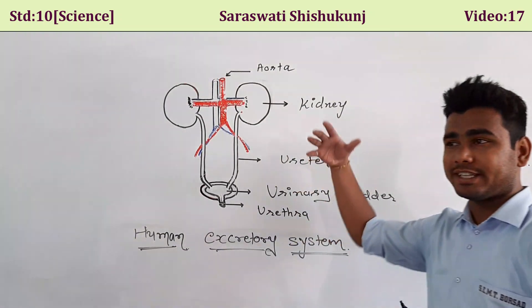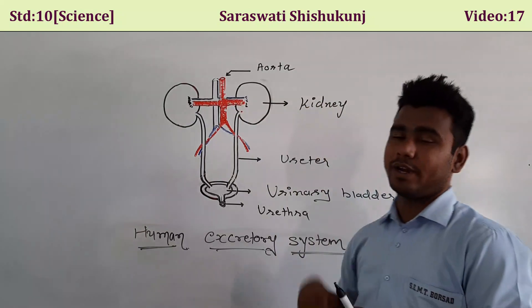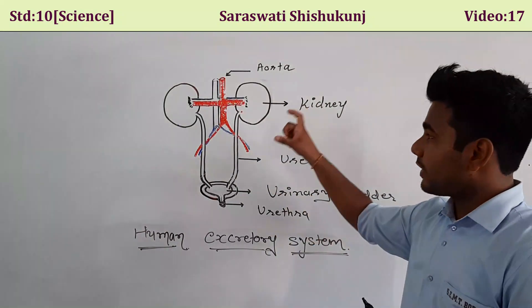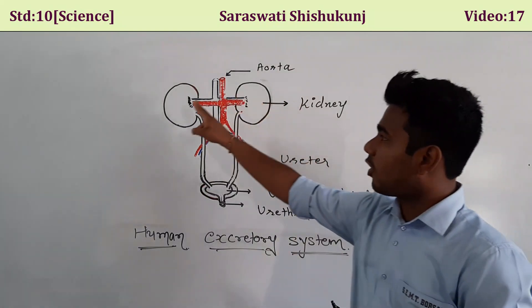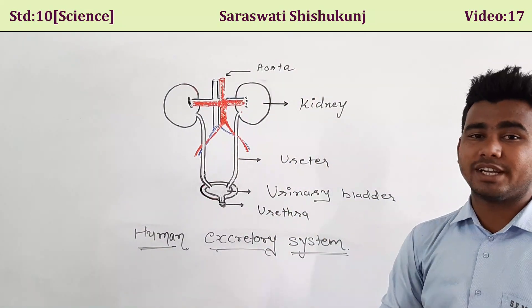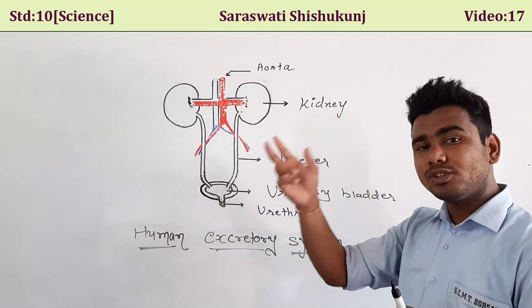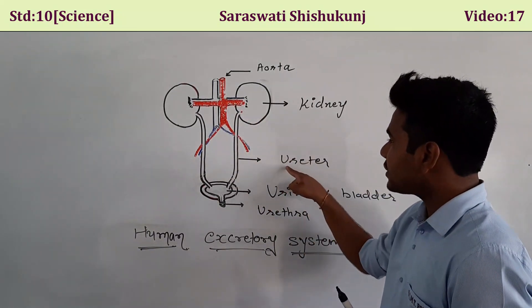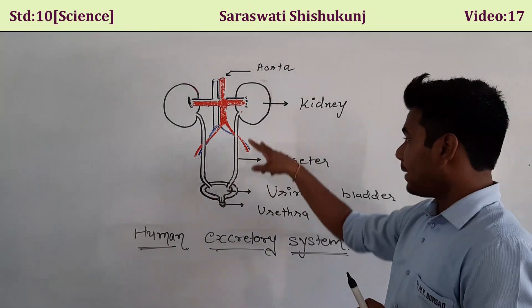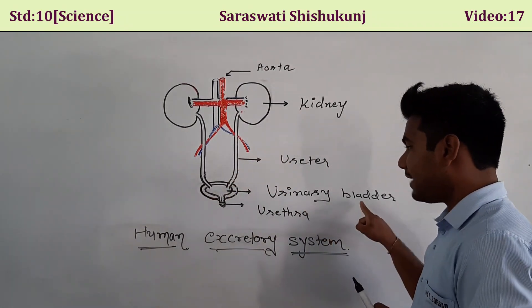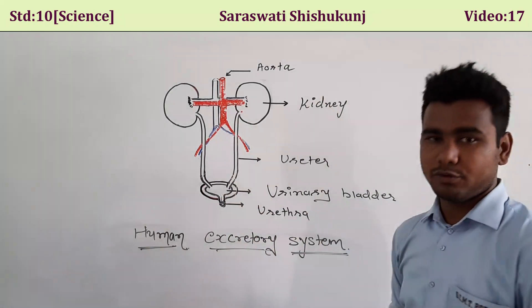The main function of the excretory system is to remove nitrogen waste from the body. The kidneys are located in the abdomen. They are bean-shaped and brownish in color. A pair of ureters collects urine from the kidneys to the urinary bladder. From the urinary bladder, by contraction, urine is expelled through the urethra out of the body.